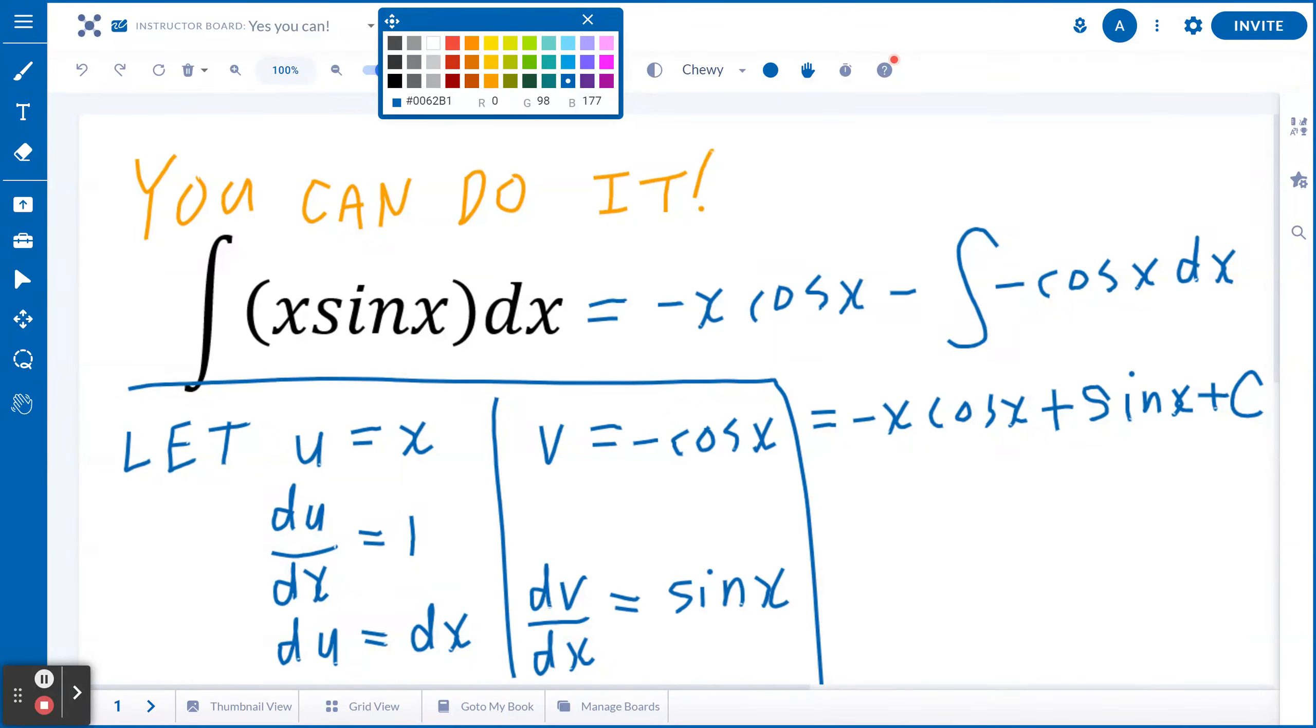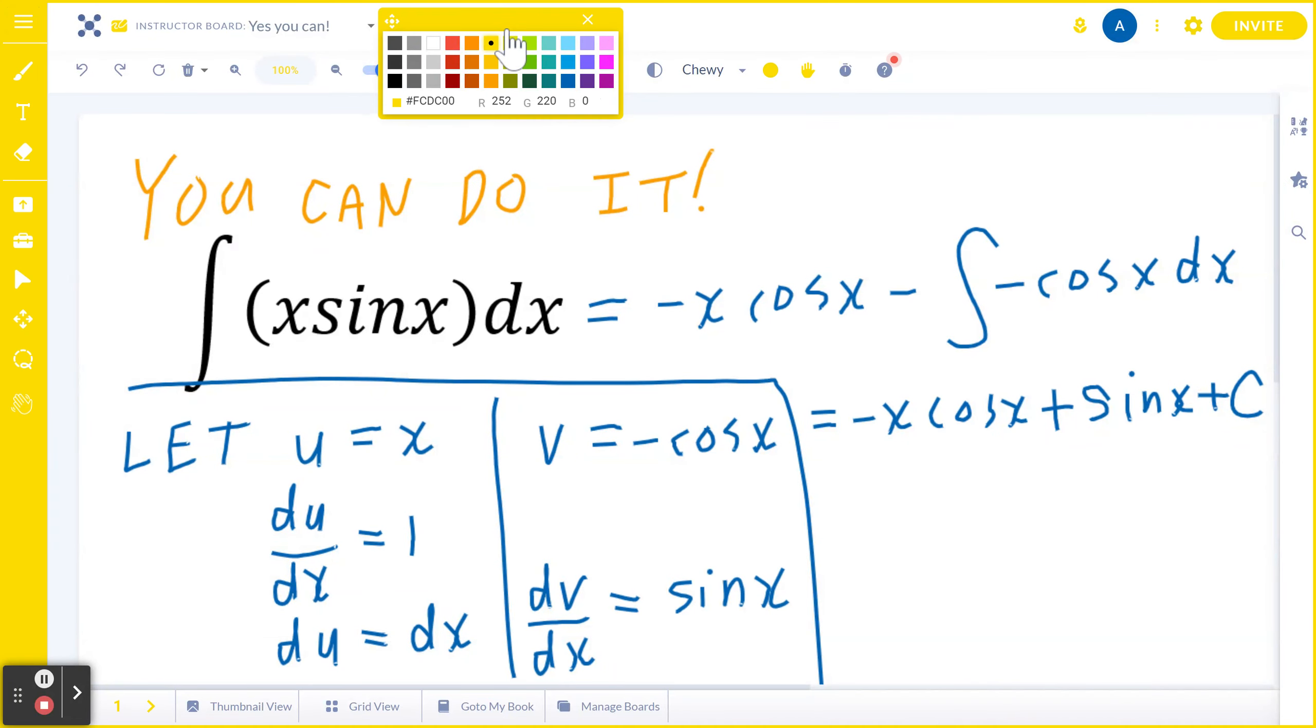Now to double check, all you have to do is spend one extra minute, find the derivative of negative x cosine x plus sine x plus c, and you will get x sine x back. I hope this makes sense.